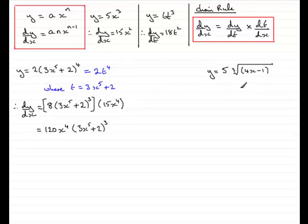Let's try this one. Why equals 5 times the cube root of 4x minus 1? Well before I start what I want to do is write this in index form. I can say that this is equal to 5 multiplied by 4x minus 1 all to the power of a third. Remember the cube root is a third.